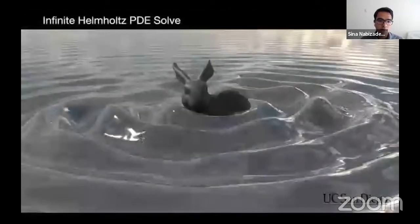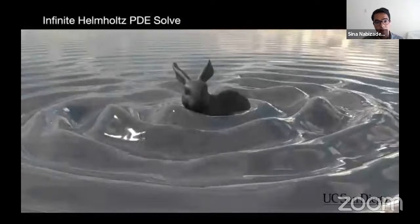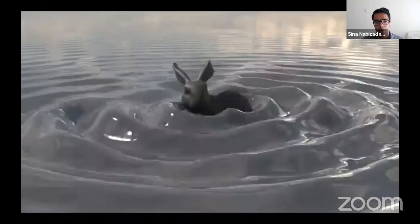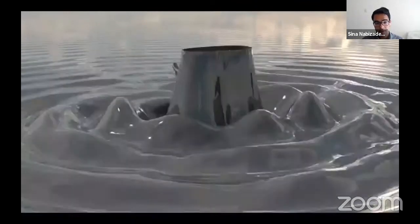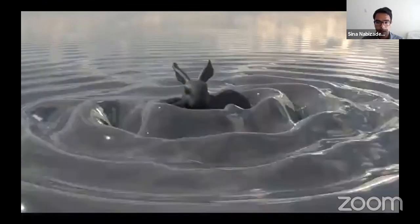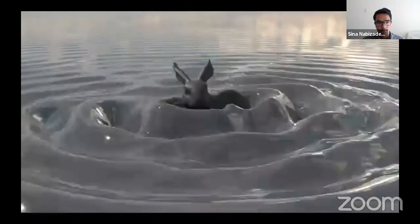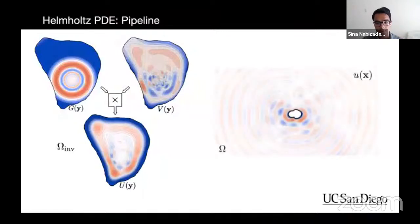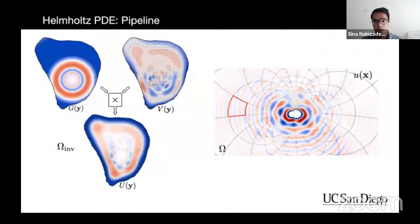We can also use the Kelvin transform to solve the Helmholtz PDE in the infinite domain. Here we see the acoustic wave from a vibrating bunny in the infinite 3D domain, visualized as a 2D height field — even at the horizon the waves are oscillating. To the best of our knowledge, this is the first infinite domain Helmholtz computation on a grid without artificial absorbing boundary conditions. Despite coarsening grid resolution, accurate frequencies are still captured, as function G analytically captures oscillating behavior extending to infinity.